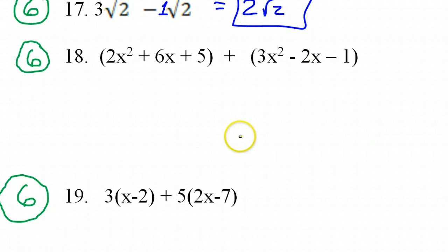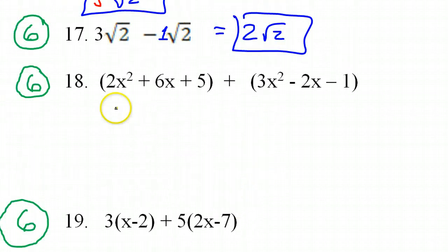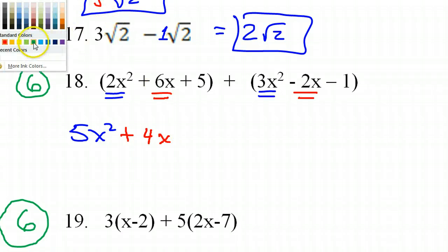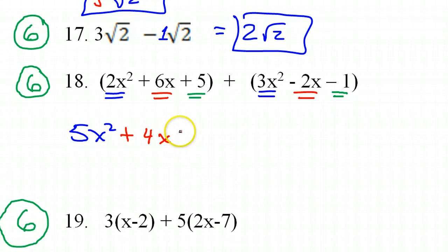So hopefully nobody got this problem wrong because it was the easiest problem on the test. Well, one of the easiest. Number 18. Good old combining like terms. I'm sure almost everybody got this right. This is addition. So you really can ignore the parentheses and just start combining like terms. Let's start off with our 2x squared and our 3x squared. Together, that makes 5x squared. Now we've got 6x and negative 2x. Together, that is 4x. And then we've got positive 5 and negative 1. Together, that makes 4. So this would be your answer for number 18.